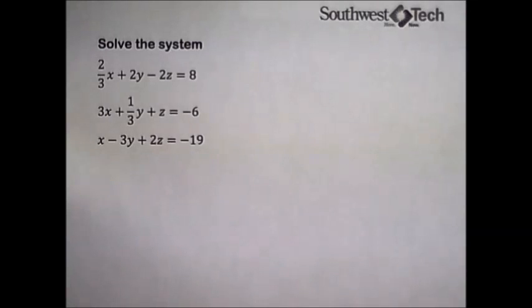Let's take a look at solving another system of three equations and three unknowns. You always want to make sure that you have your variables lined up, which we do. They are all in standard form, ax plus by plus cz equals d.